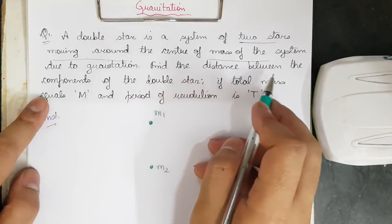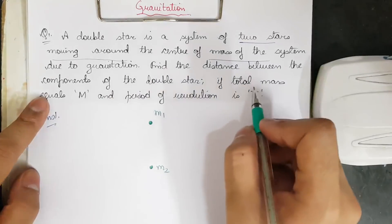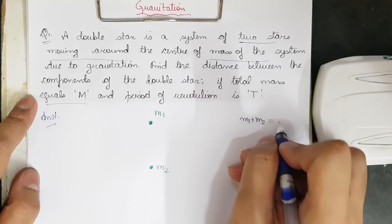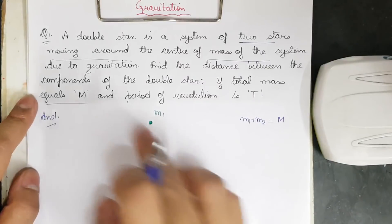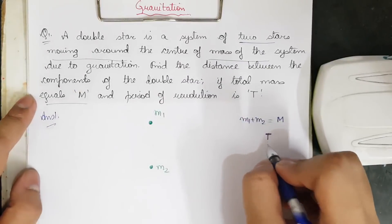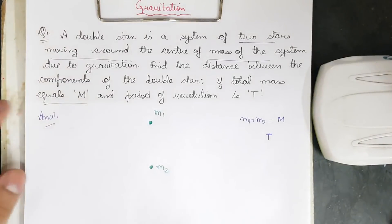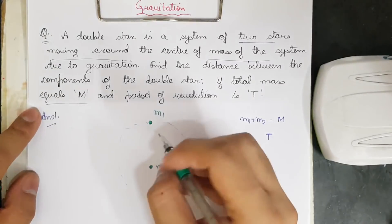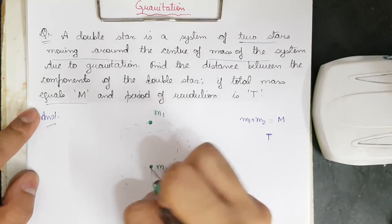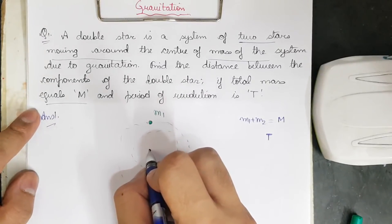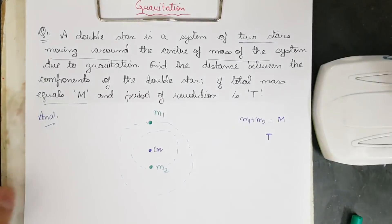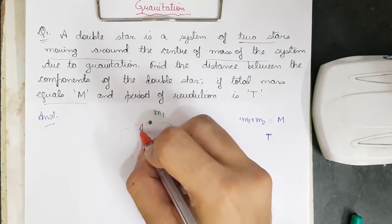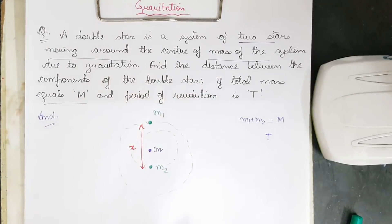We need to find the distance between the components of the double star if the total mass equals M, so m1 plus m2 equals M. The period of revolution is T. Mass m1 rotates in a circular path and mass m2 also rotates in a circular path. Let the center of mass be somewhere here, and let the distance between m1 and m2 be some variable x.